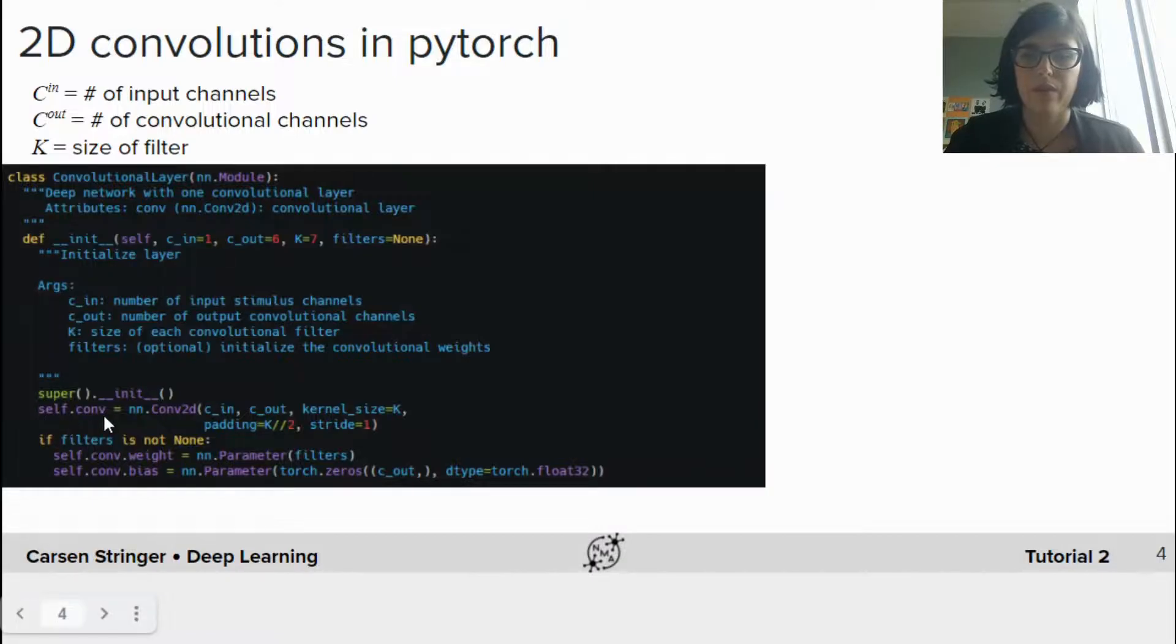So let's create our convolutional layer. We're going to create self.conv as a nn.conv2d variable. And this takes as input cin, cout, the kernel size, the padding and the stride. And we're going to set it so that we get the same, the padding and the stride, so that we get the same size output as we do as we have input. And then we're going to set the filters. We're going to set the weights of our conv layer to these filters that we're inputting. And then we're going to set the bias terms to zero for each of these convolutional channels.